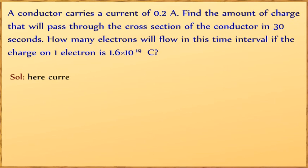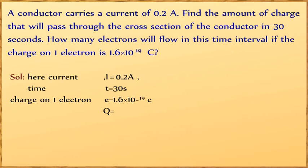Here is the solution. Given: current I = 0.2 ampere, time t = 30 seconds, charge on one electron e = 1.6 × 10^-19 coulomb. Using Q = It, we get Q = 0.2 × 30 = 6 coulomb.